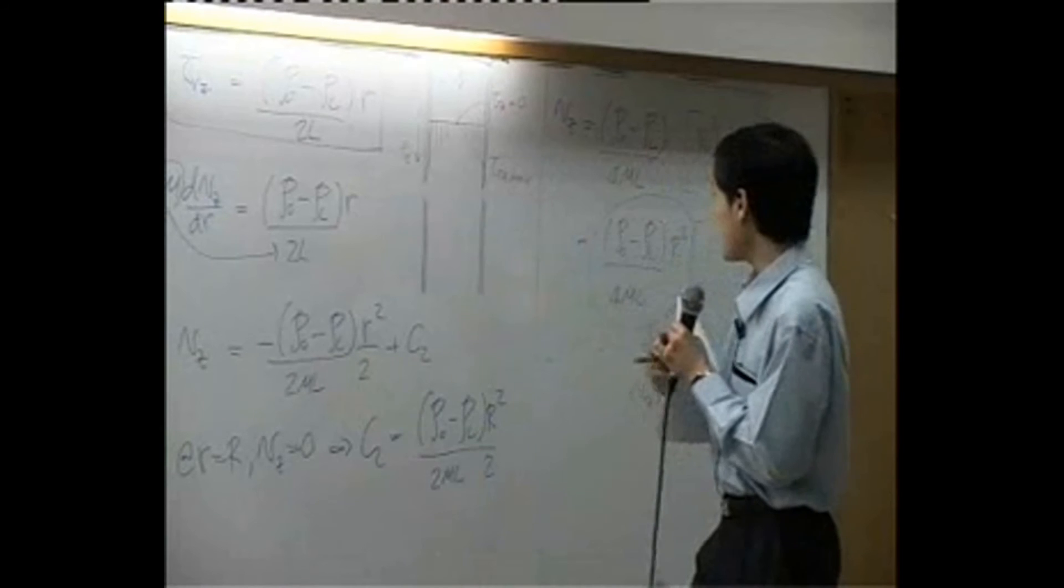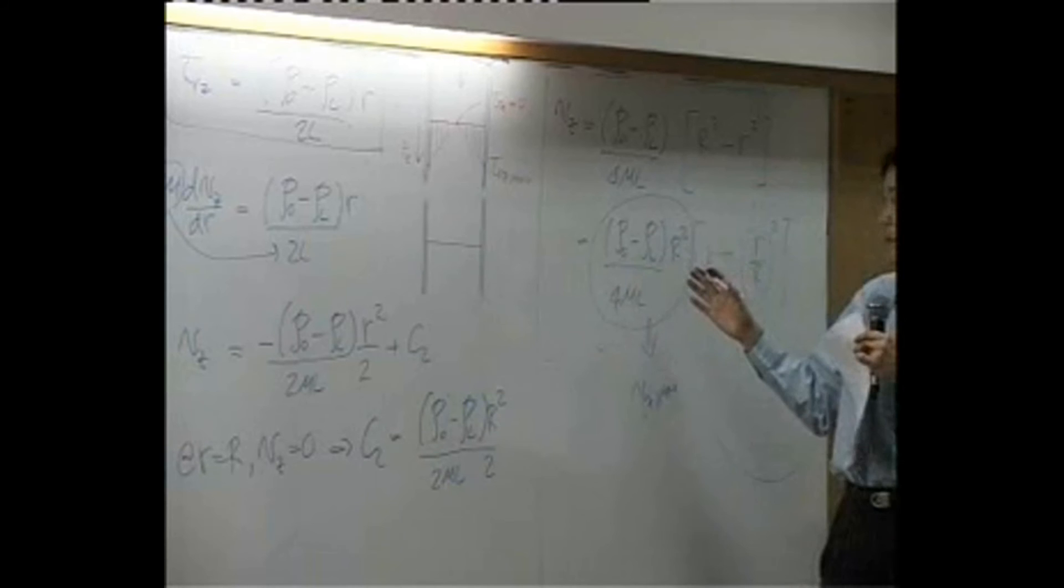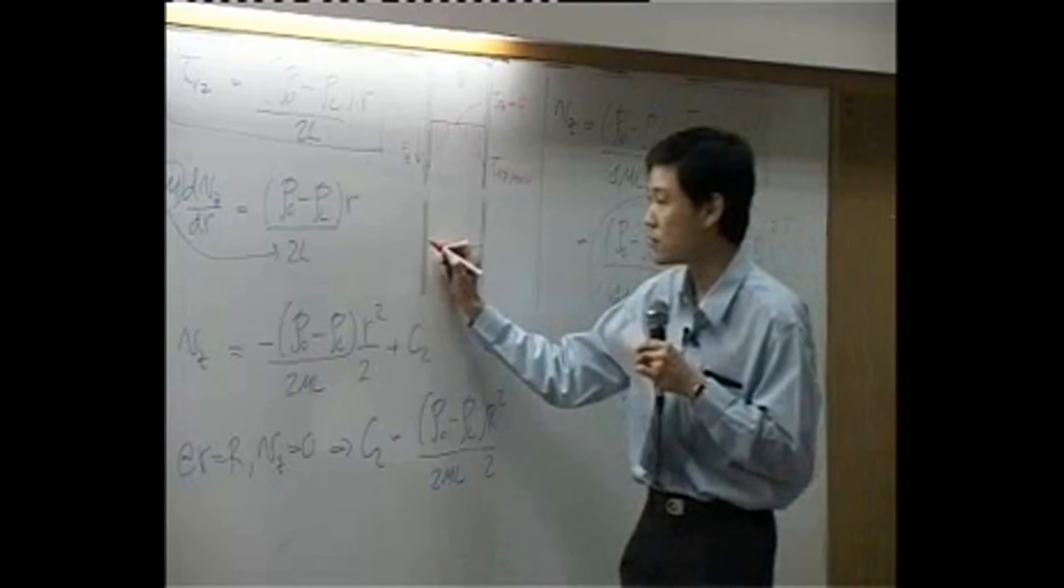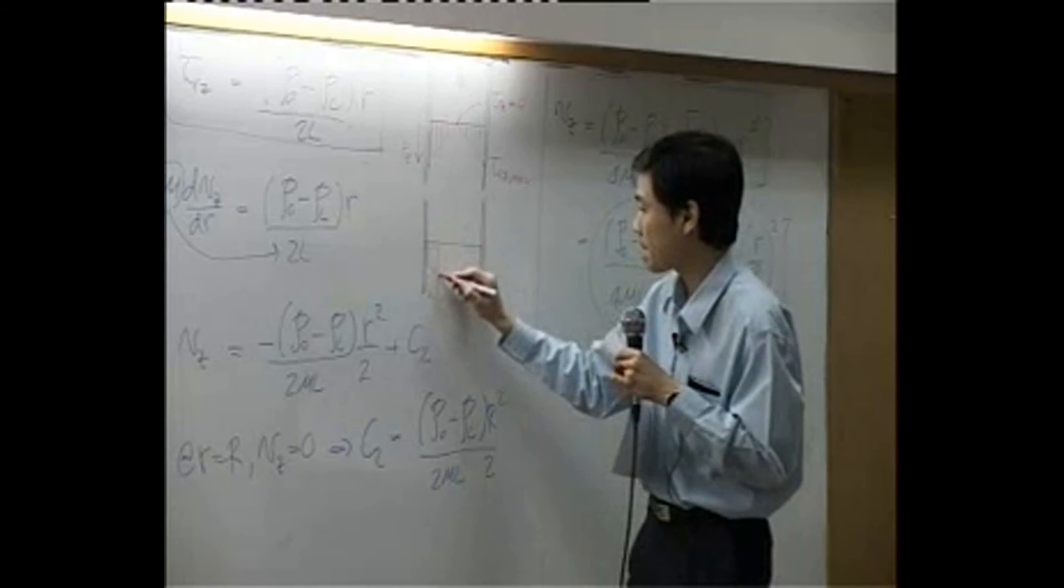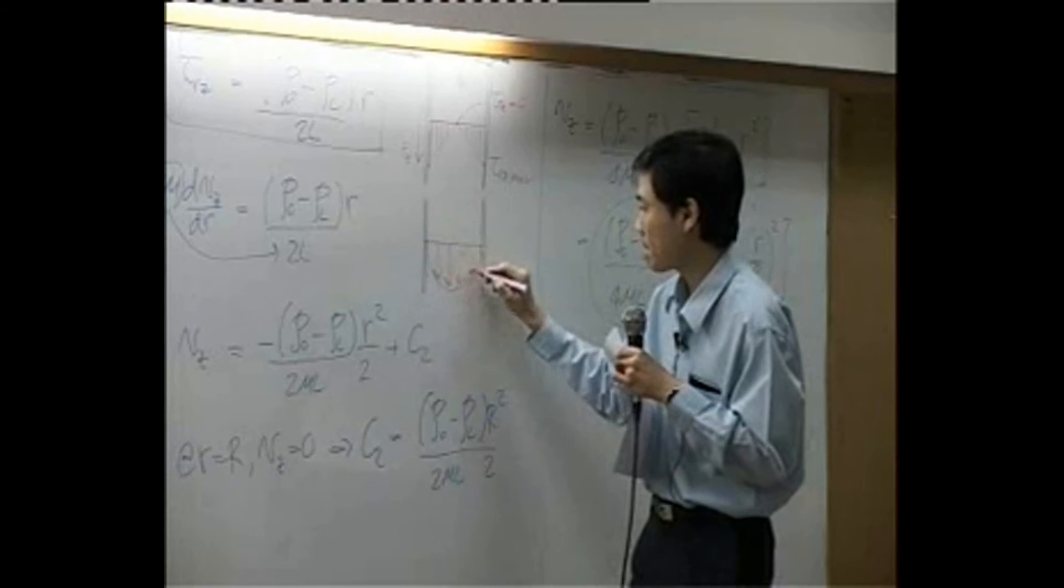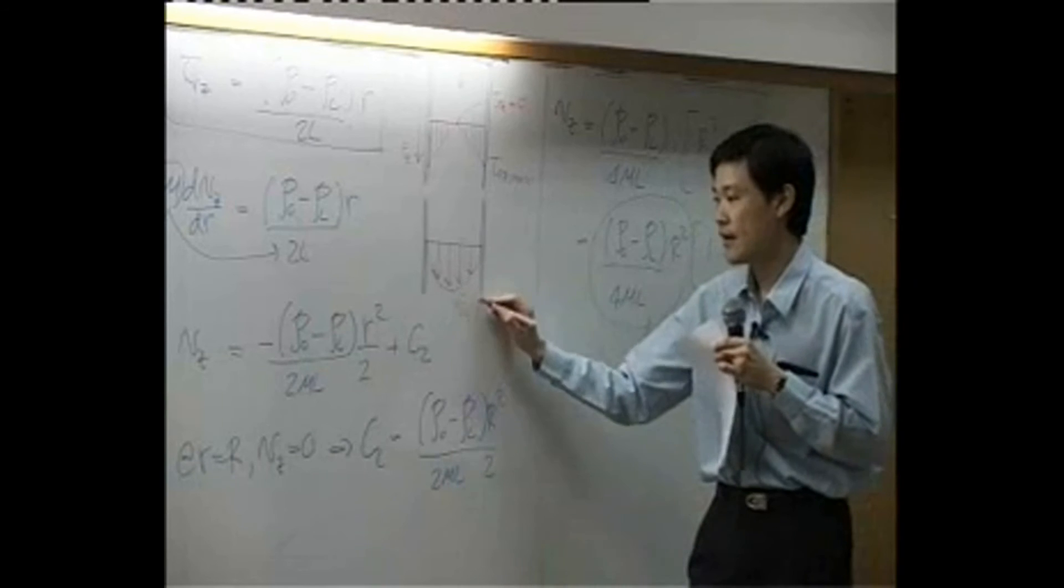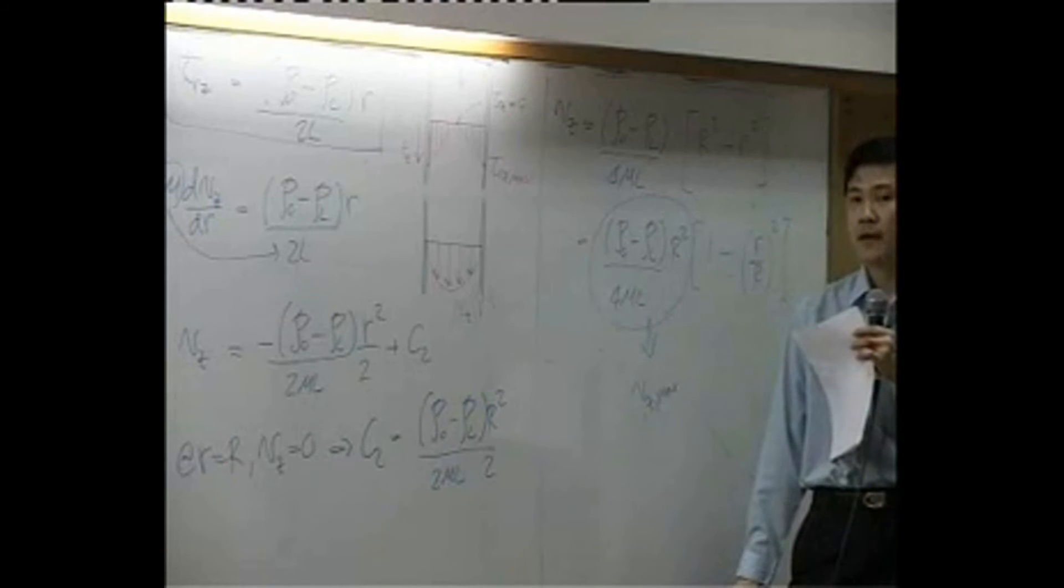According to that equation, you see that velocity here is a parabolic function with respect to r. So this r squared - it's maximum at the center, is zero at the wall, so it looks something like this. This is vz as a function of r.